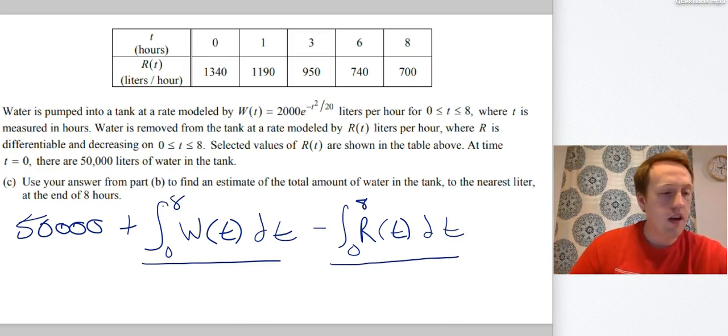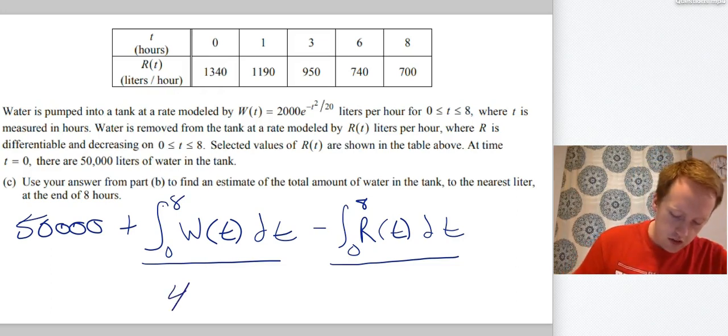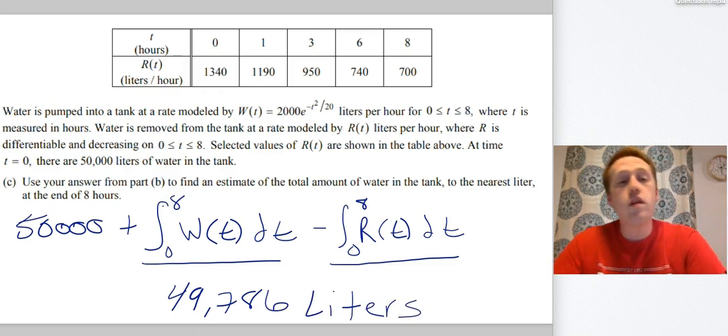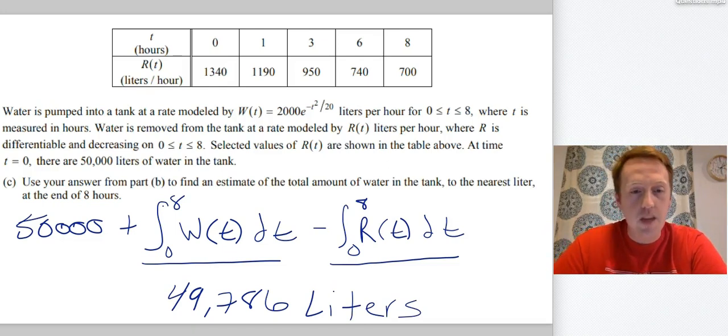So what we're going to do is we're going to use the calculator for that integral. We're going to use the estimate that we got in part B for that one. And once you actually do that, you go into the calculator and do those calculations. You get about 49,786 liters. And this is one of those cases where it says to the nearest leader. When you go into your calculator, you're going to get lots of decimals because that W of T integral is going to be messy. But it says do it to the nearest leader. So round to the nearest leader.